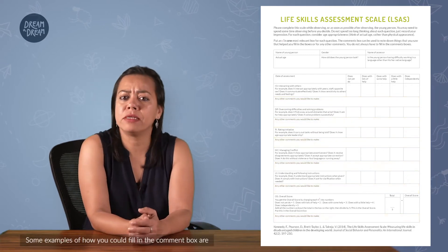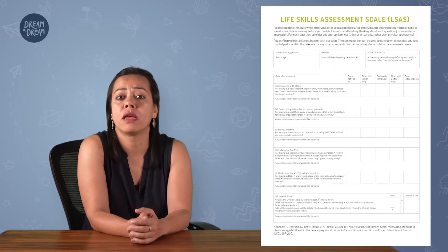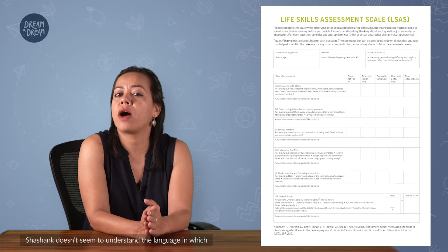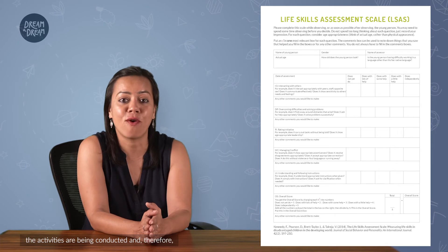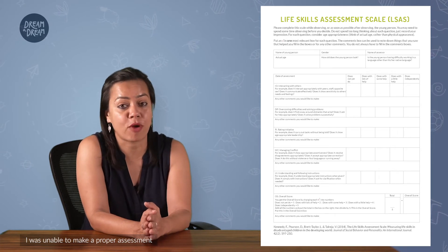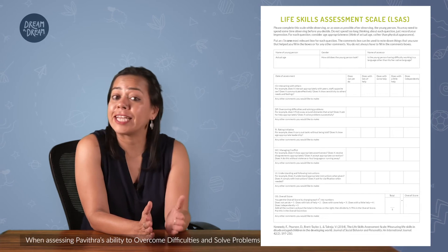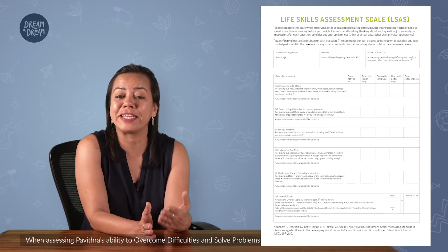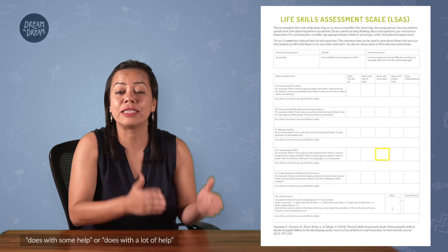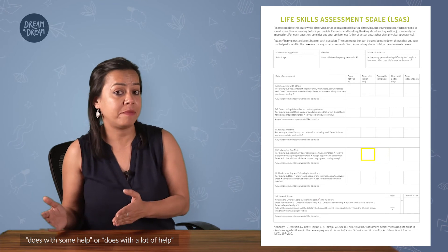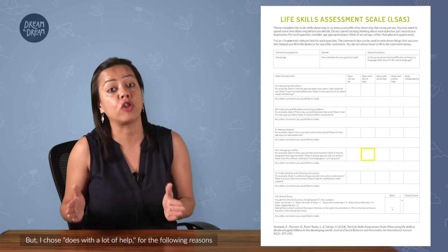Some examples of how you could fill in the comment boxes are as follows. Shashank does not seem to understand the language in which the activities are being conducted, and therefore I was unable to make a proper assessment. Or, when assessing Pavitra's ability to overcome difficulties and solve problems, I was not sure whether to put down 'does with some help' or 'does with a lot of help,' but I chose 'does with a lot of help' for the following reasons.